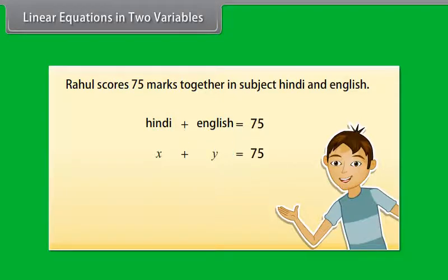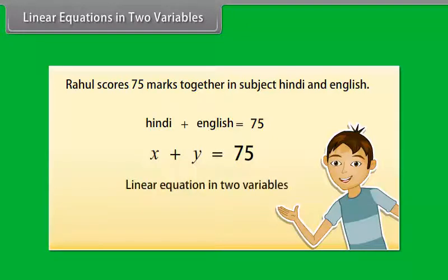So, X plus Y is equal to 75 is the required equation. This is an example of linear equation in two variables.